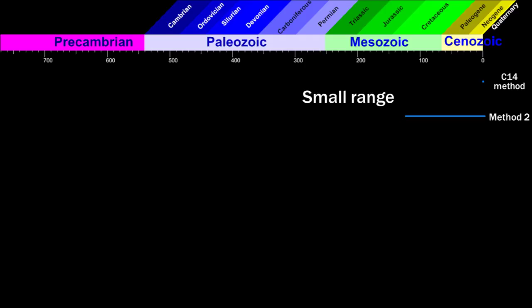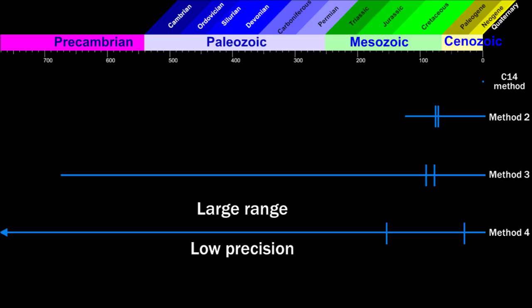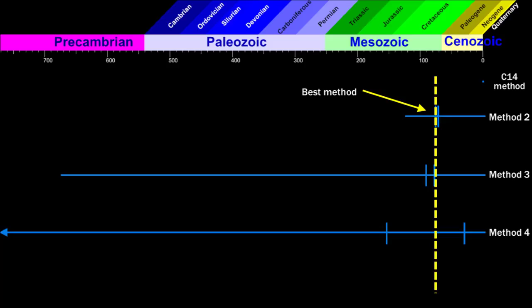The maximum age of each dating method differs. And generally, we can say that dating methods with a smaller range have a higher accuracy, and dating methods with a larger range have a larger accuracy. So this illustrates how it works for a rock of almost 80 million years. Method 2 would give the most accurate age for this rock.